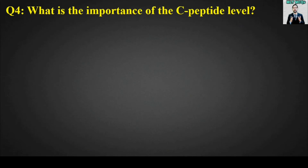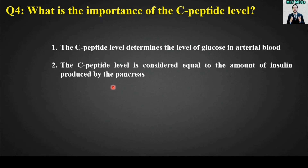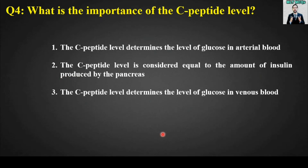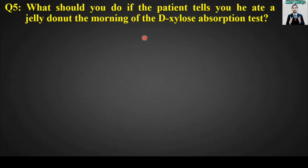MCQ number four: What is the importance of the C-peptide level test? Options are: it determines the level of glucose in arterial blood; it is considered equal to the amount of insulin produced by the pancreas; it determines the level of glucose in venous blood; or none of the above. The right answer is option number two — the C-peptide level is considered equal to the amount of insulin produced by the pancreas.